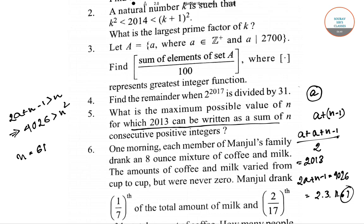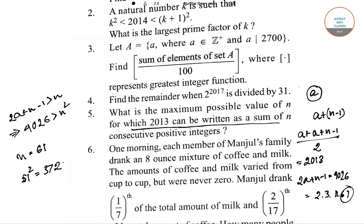If you compute 61 squared, you get 3721, which is less than 4026. But 62 squared would exceed 4026. So the highest possible value of n is 61. Therefore, the maximum possible value of n is 61.